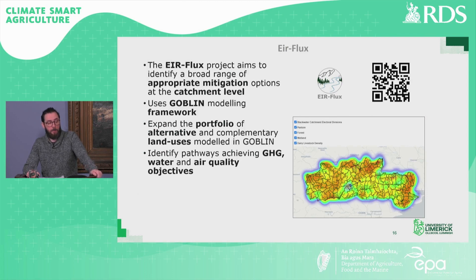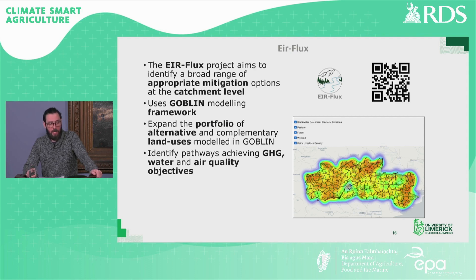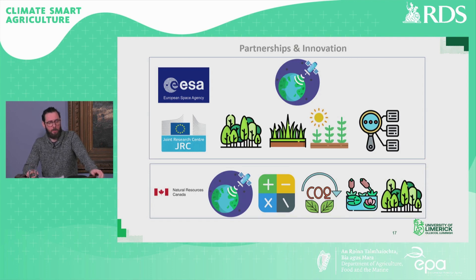In terms of ongoing development of the model, the Air Flux project aims to identify appropriate mitigation options at the catchment level. We're utilizing the GOBLIN modeling framework for that and attempting to expand the portfolio of alternative land uses modeled within the framework. We are aiming to look at net zero pathways but also include water and air quality objectives. In terms of fostering partnerships and innovation, we're collaborating with the Joint Research Council on land use and crop system classification using remote sensing data, and also working with Natural Resources Canada to include their spatially specific peatland and forested land tools.